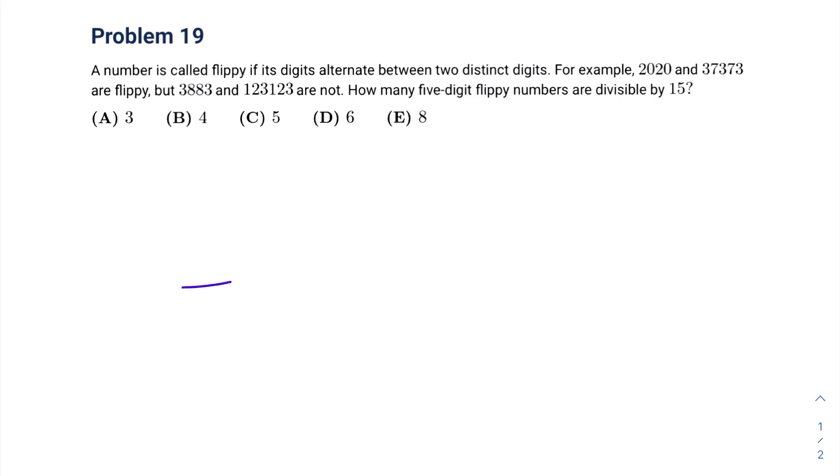So let's start by drawing 5 empty spaces to represent our 5 digits. And we'll say our 5-digit flippy number is ABABA, where A and B are variables and they're also digits.